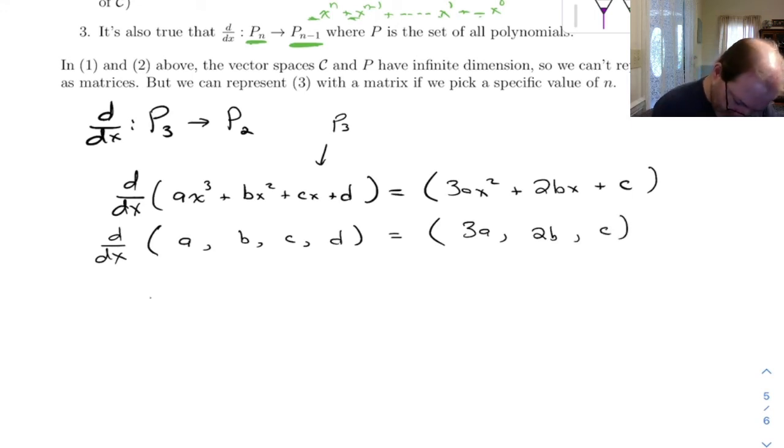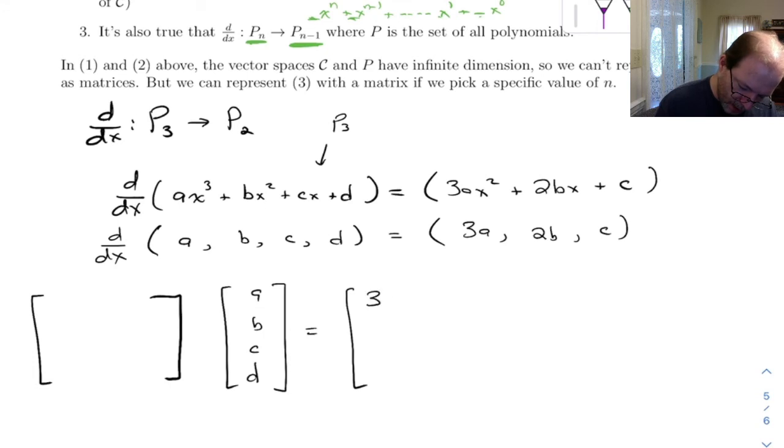So what we need here is a matrix that maps [a, b, c, d] to [3a, 2b, c].